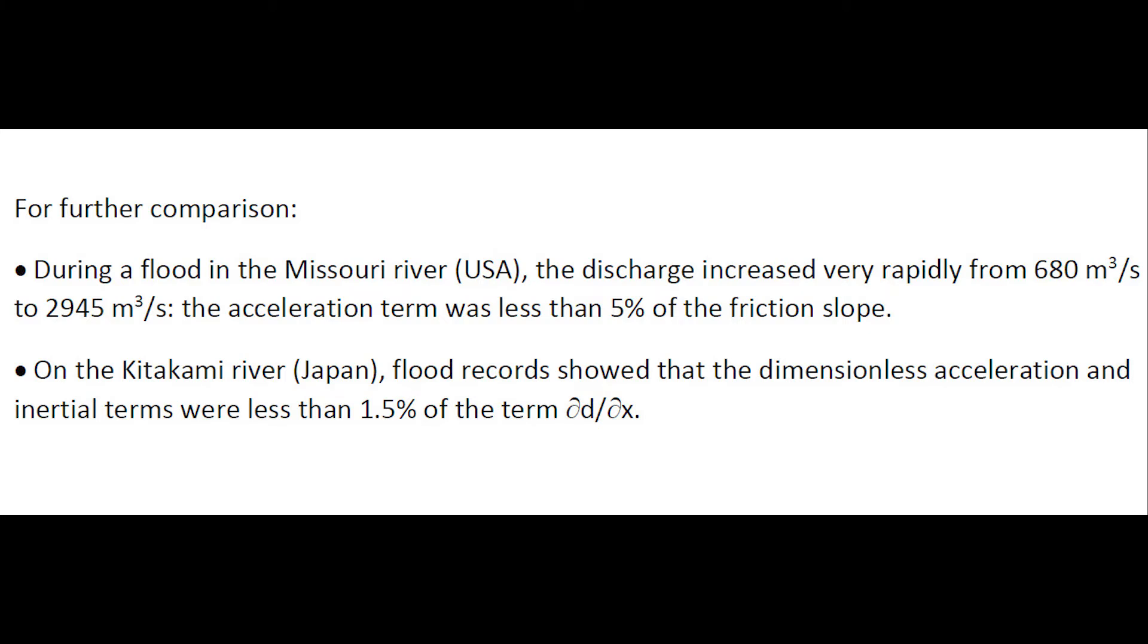For further comparison, during a flood of the Missouri river, the discharge increased very rapidly from about 700 cubic meters per second to about 3,000 cubic meters per second. The acceleration term was less than five percent of the friction slope.